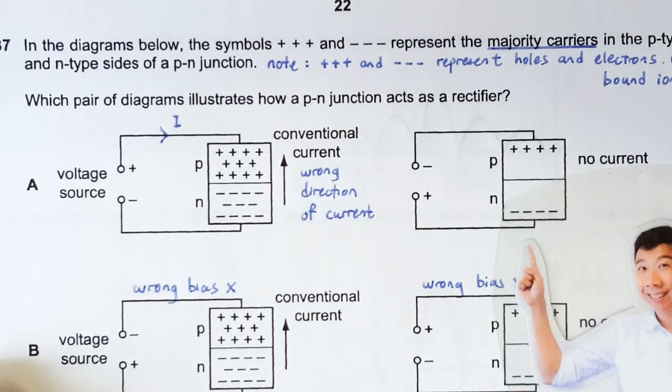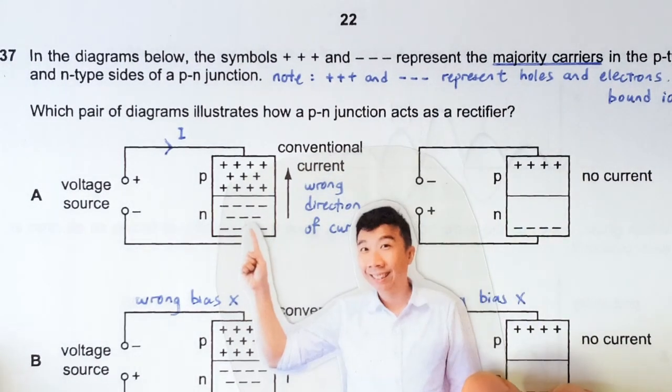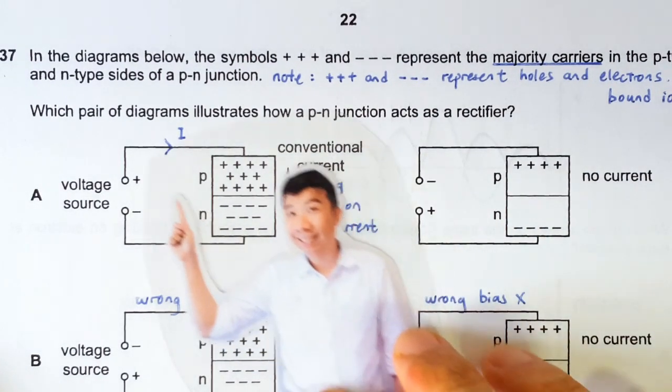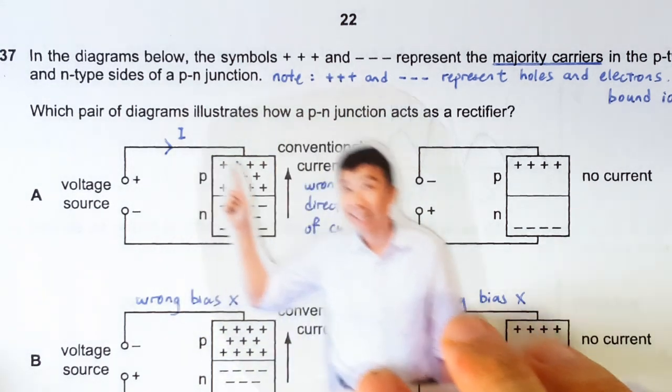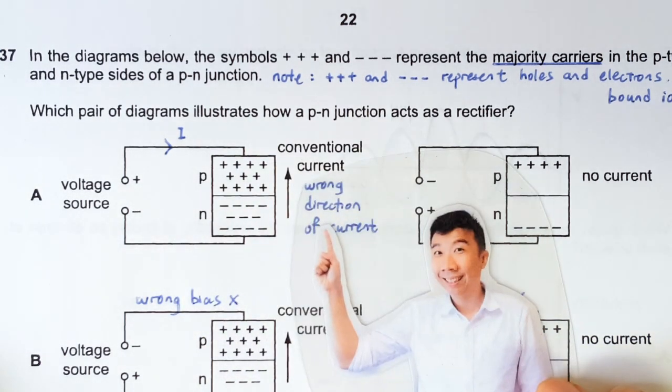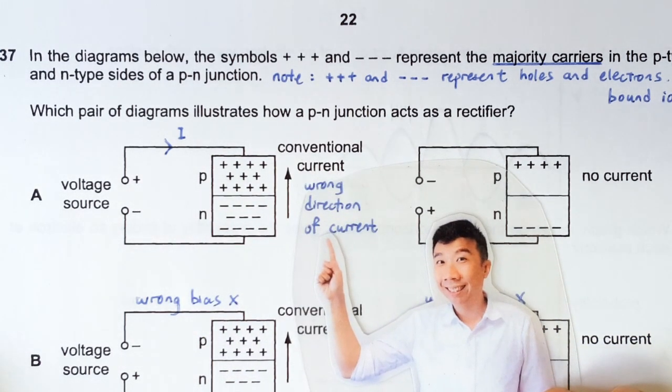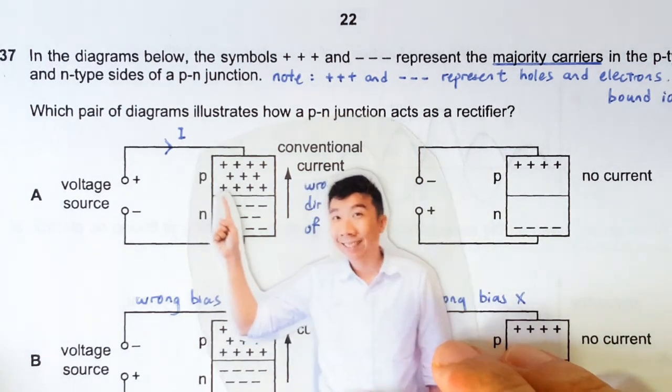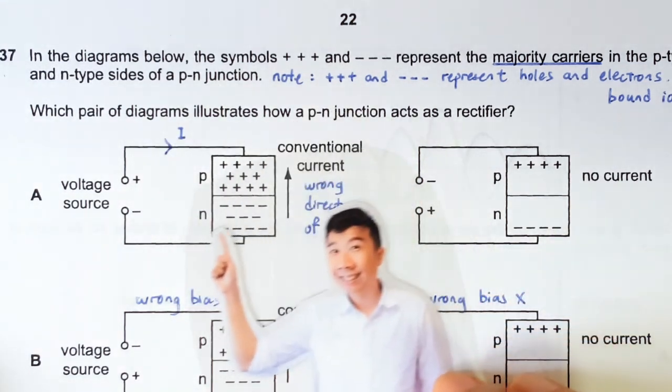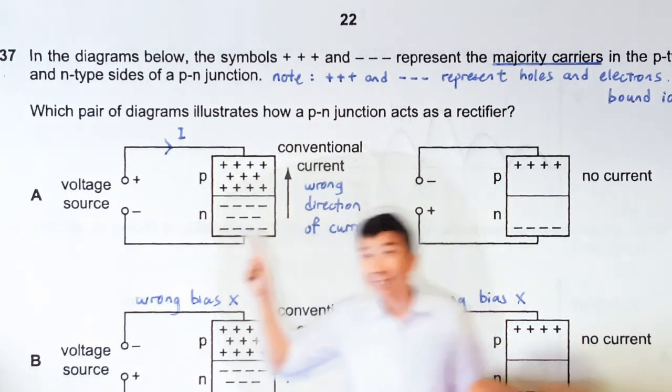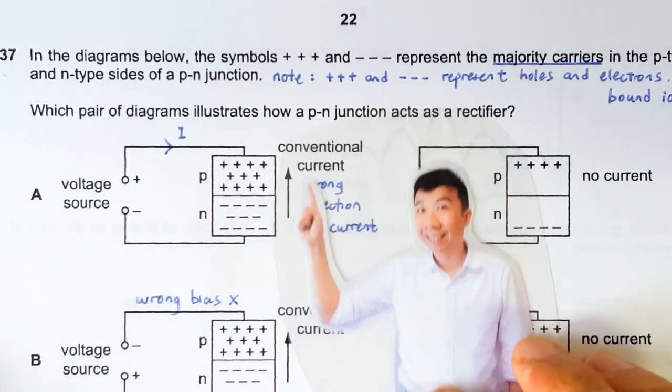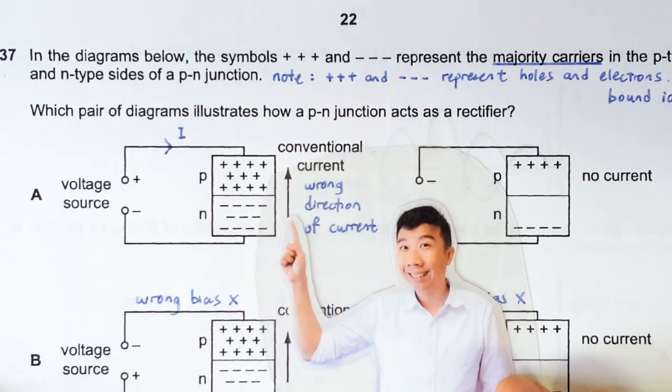So what's wrong with the other options? This one shows correctly that this guy is in forward bias, but it has got the direction of the current wrong. When in forward bias, the current should be flowing this way, from the top to the bottom, not from the bottom to the top. So that's the only thing wrong with this option.